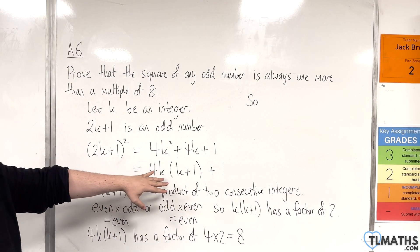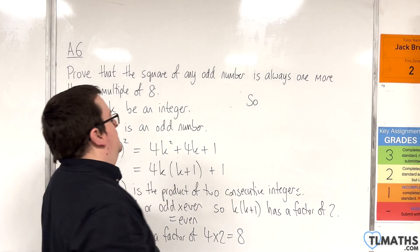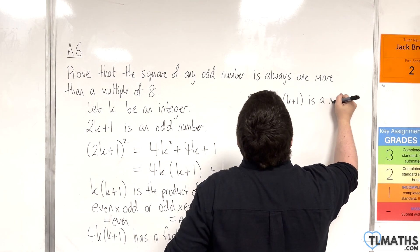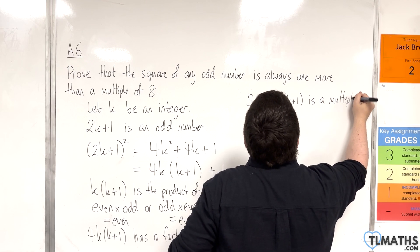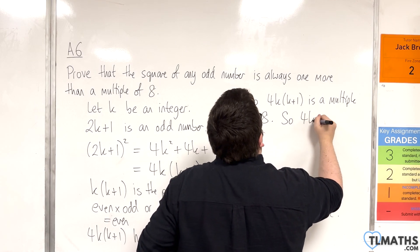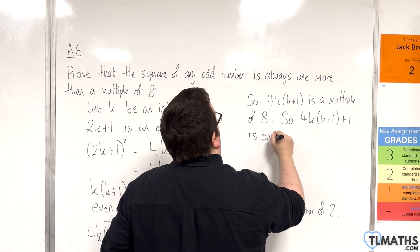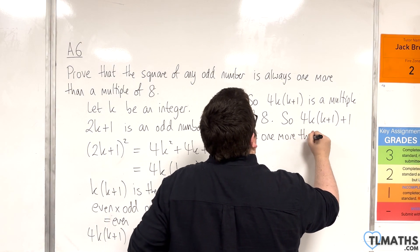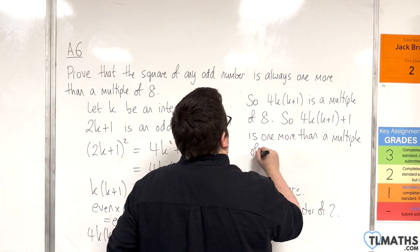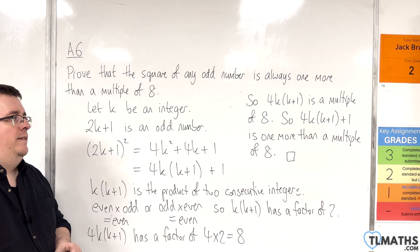So if 4k(k + 1) has a factor of 8, then 4k(k + 1) must be a multiple of 8. Therefore 4k(k + 1) + 1 is 1 more than a multiple of 8. And that is as required. And that concludes it.